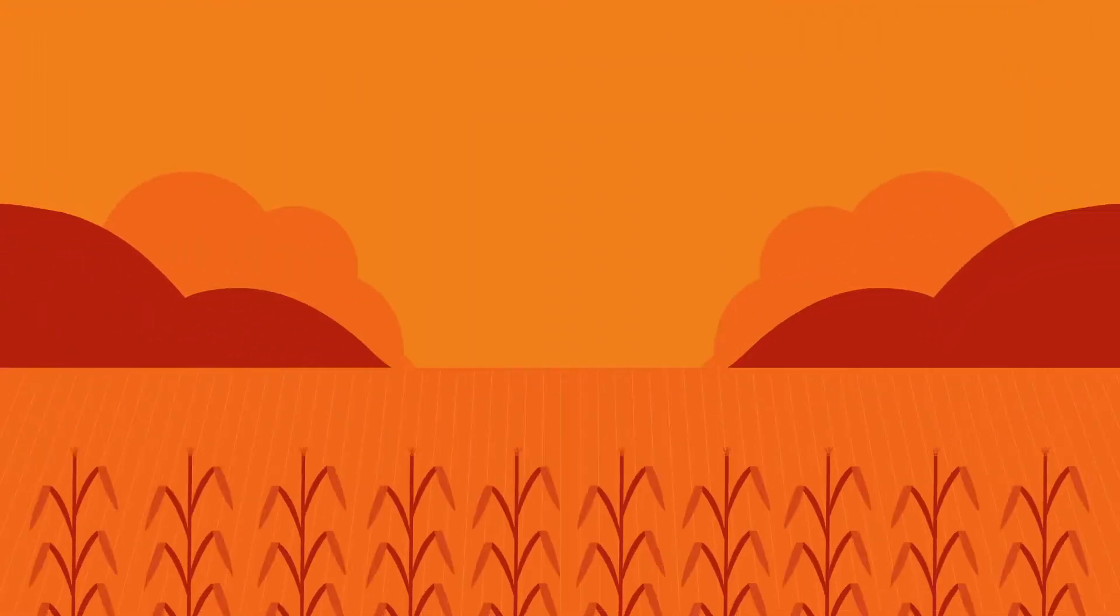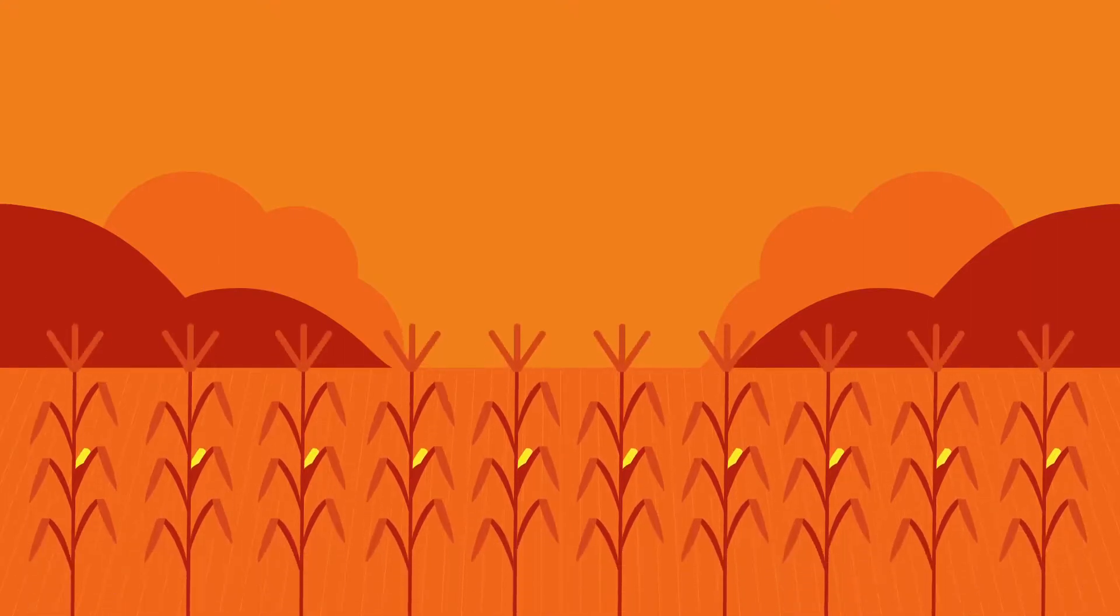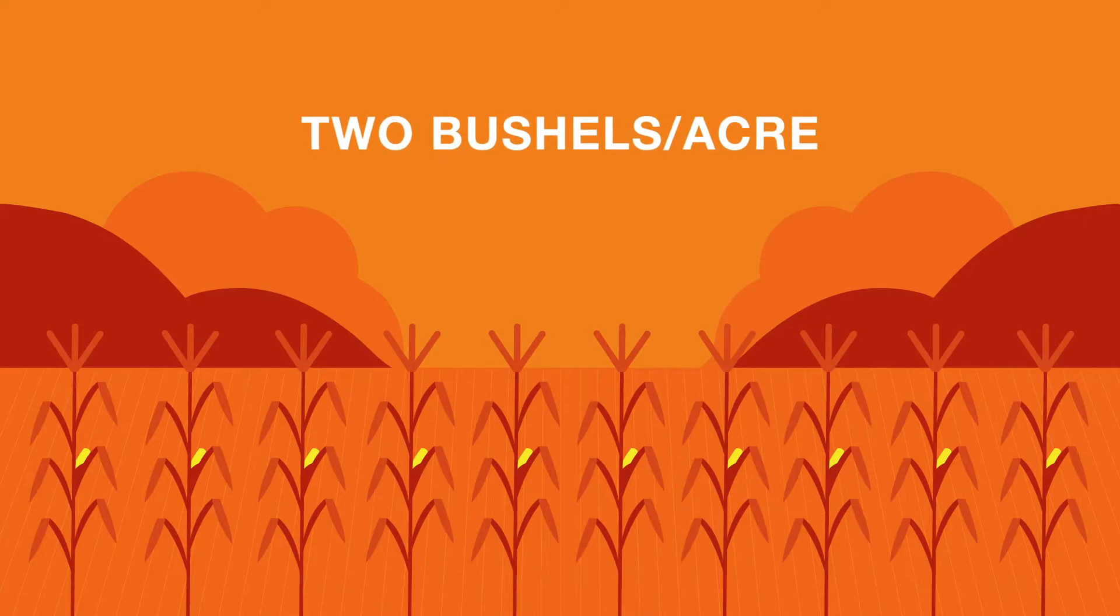Or in other words, rooting power below ground pays big dividends above it. Corn grown with Vibrance is proven to increase yield by an average of two bushels per acre over Cruisermax corn alone.